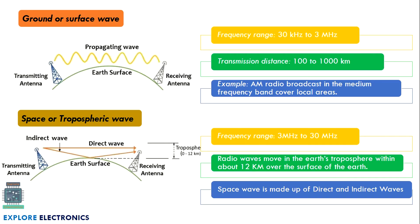The next one is space or tropospheric wave. Troposphere is the region above the earth surface from 0 to 12 kilometers - we call it the troposphere. The transmission of signals in this region is called space wave. From the transmitting antenna to receiving antenna, you can see in this diagram it may take two paths.